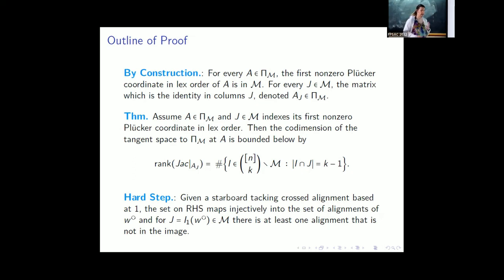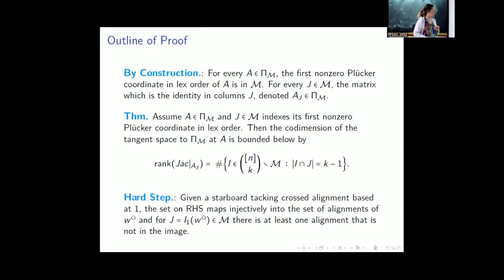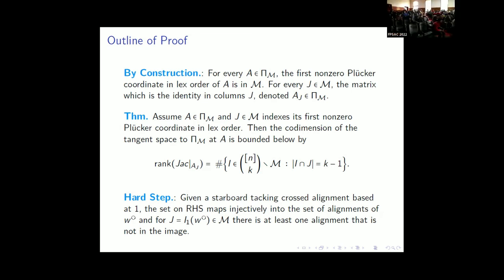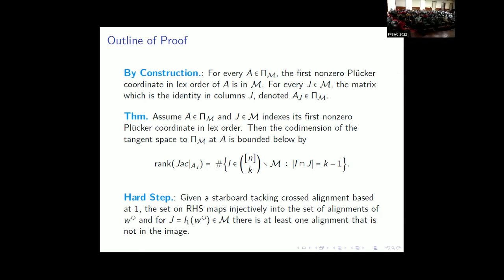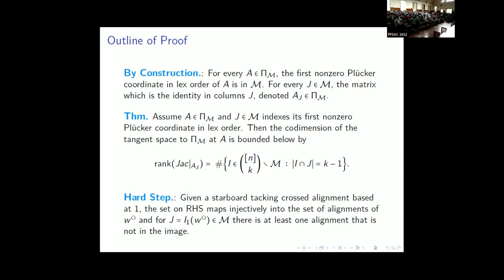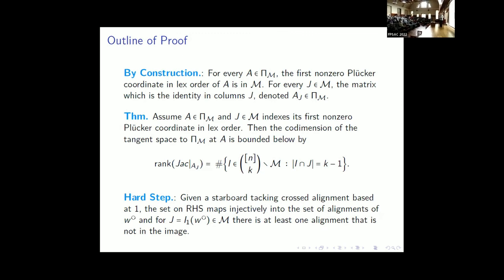The hardest part of the proof was finding an explicit singular point when we have a crossed alignment. The key idea was to think about the alignment as a boat: the right-hand arm is the starboard side, the left-hand arm is the port side. We arrange a starboard-tacking crossed alignment, and if you rotate it so the tail starts at position 1, then the particular anti-exceedance set gives rise to an actual singular point. This is provable by careful analysis of the Jacobian matrix.